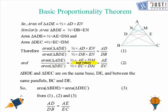Now when we look at these two equations, what we see is that triangle BDE and triangle DEC have equal area because they are on the same base DE and between same parallel lines BC and DE. So we can say that area of BDE equals area of DEC. So from equations 1, 2 and 3 we conclude that AD over DB equals AE over EC.